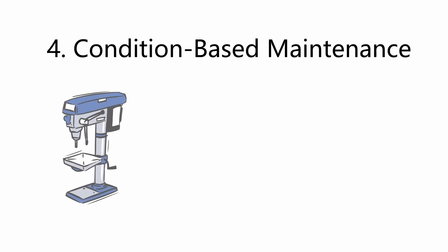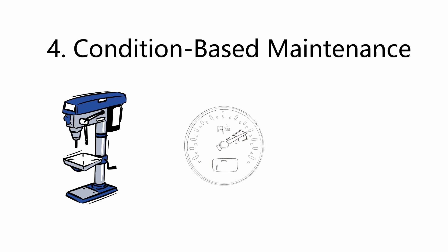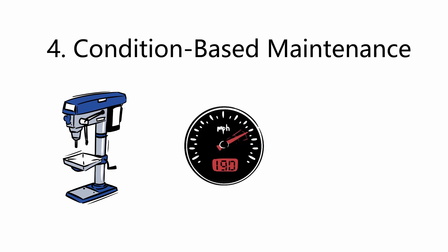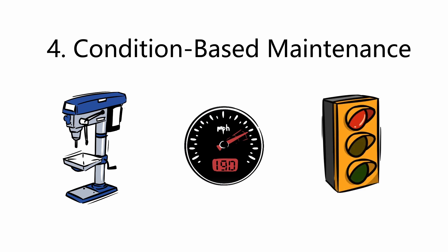Condition-based maintenance is based on equipment performance monitoring and the control of corrective actions taken as a result. The real equipment condition is continuously assessed by online detection of significant working parameters and their automatic comparison with average values and performance. Maintenance is carried out when certain indicators signal that the equipment is deteriorating and failure probability is increasing.